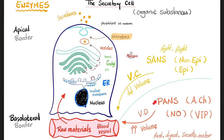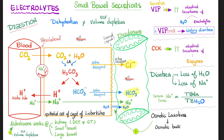Thoracolumbar versus craniosacral — no motility, no secretions. Your stomach was acidic, but your intestine is alkaline. Thanks to active secretion of chloride, bicarbonate, and water following sodium chloride via osmosis. Aldosterone on the kidney had four functions: to absorb sodium and water, and to secrete potassium and hydrogen. Aldosterone also works on your small intestine and even more on your large intestine.